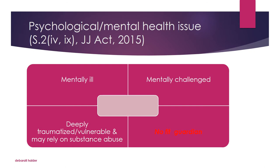The next category includes those children who are suffering from psychological or mental health issues. These categories of children may be found under Section 2(14), clauses 4 and 9. These children may include those who are mentally ill — for example, suffering from autism or any mental health condition — or mentally challenged, including those with mental retardation. Next are those who are deeply traumatized, where the mental condition is temporary and can be addressed through proper counseling. They may be traumatized, vulnerable, and may rely on substance abuse to cope.